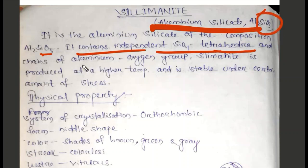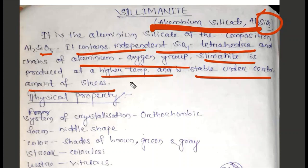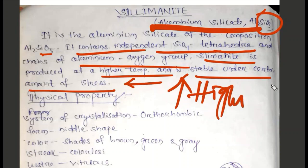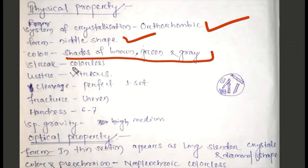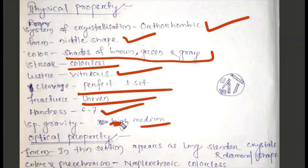Sillimanite has composition Al2SiO5. It contains independent SiO4 tetrahedra and chains of aluminum oxygen group. Sillimanite is produced at high temperature. Physical properties: System of crystallization is orthorhombic. Form is needle shape. Color is shades of brown, green, gray. Cleavage perfect, one set. Fracture uneven. Hardness 6 to 7, specific gravity medium.